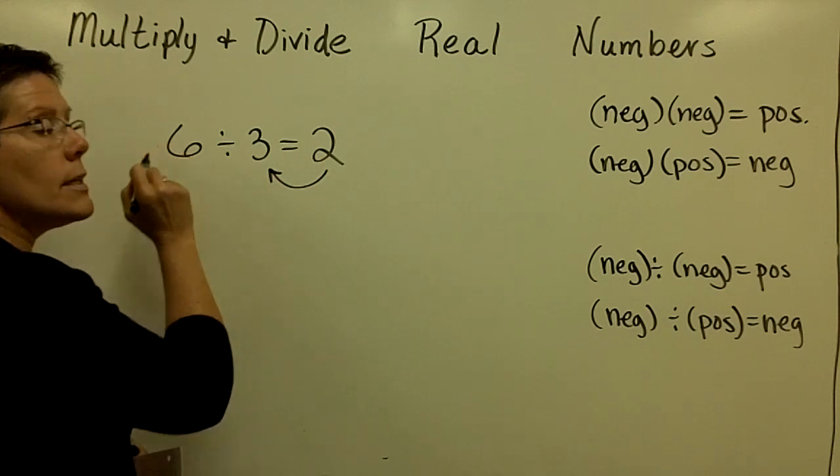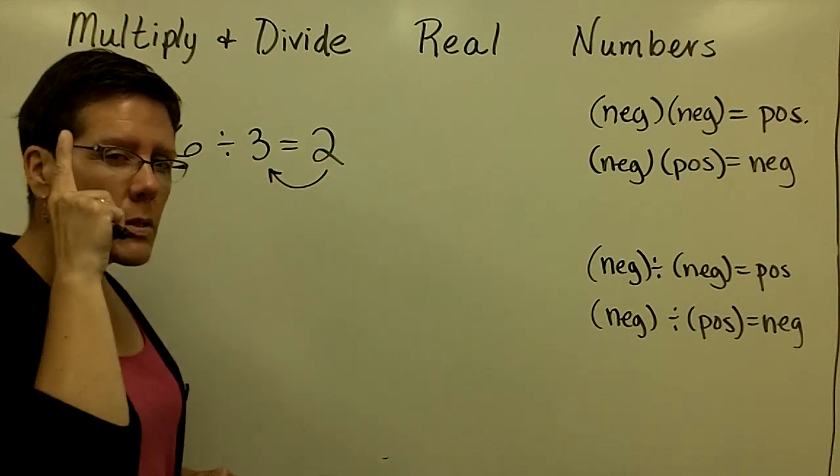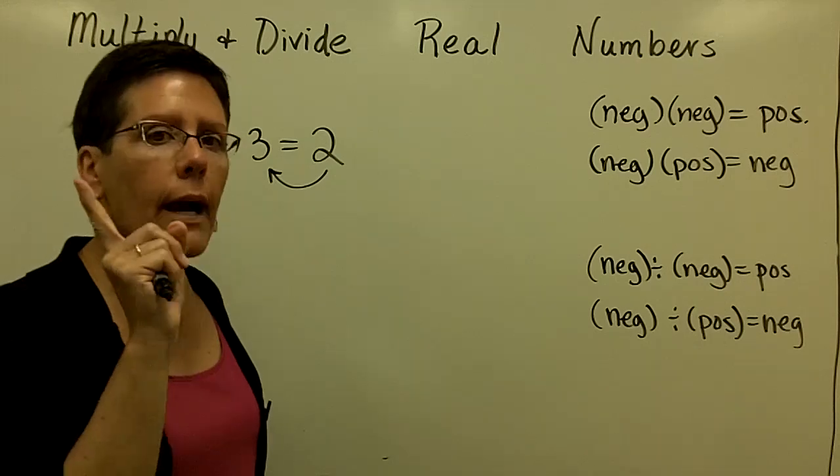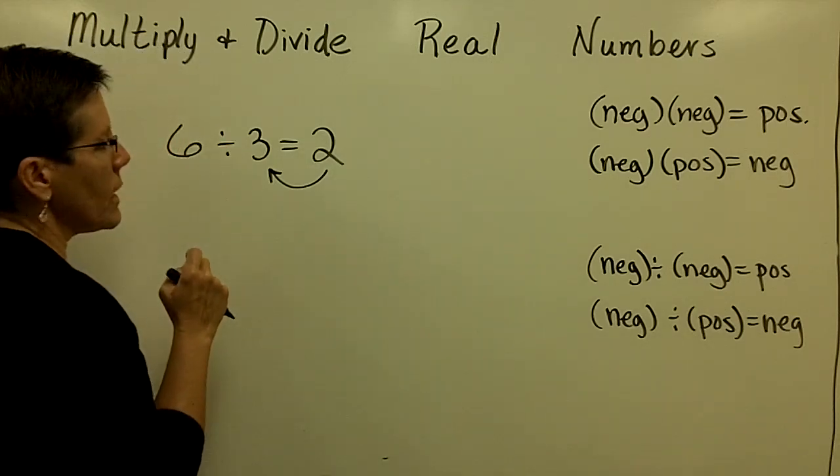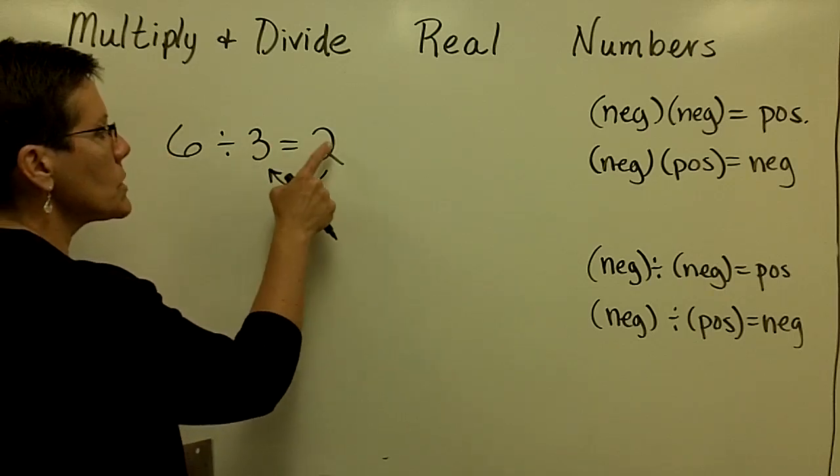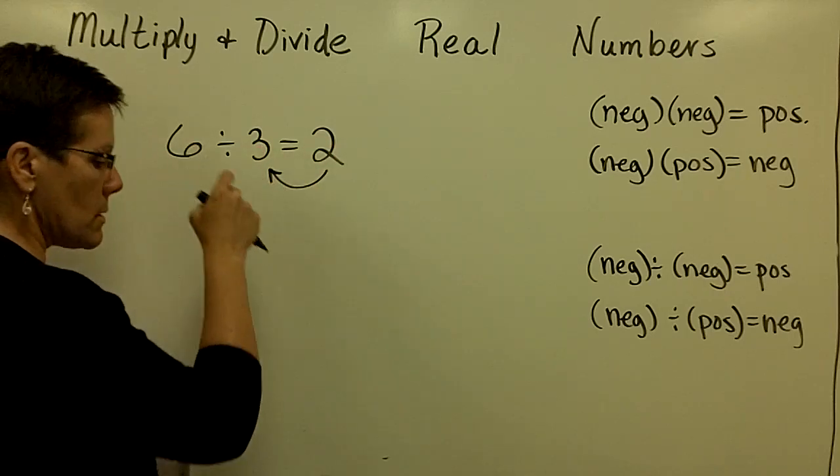So this 2 times 3, does it give us that 6? And that was how we could say to ourselves, oh yeah, I did that correctly. Because division was kind of a hard thing to get a handle on. So again, we knew this was correct because 2 times 3 is equal to 6.